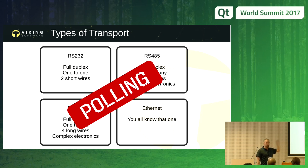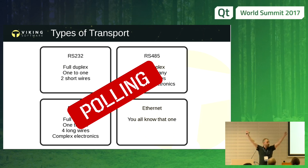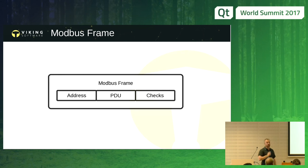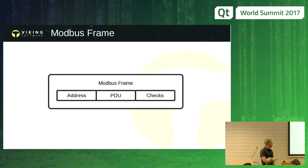But it's polling — you need to ask your remote terminal unit every time you want to know something. Every time we ask a Modbus RTU device to do something, we send a frame. The frame consists of an address, a protocol data unit (PDU) containing what you want to do, and then some checks. This Modbus frame is used with serial links; on Ethernet it just passes raw PDUs, because Ethernet gives us address and checking by being TCP. Today we'll be focusing exclusively on single read and single write.